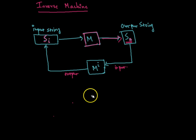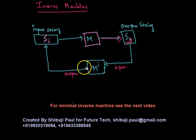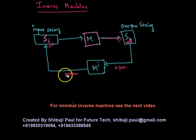In this tutorial I am going to show you how to find the inverse machine of a given machine m. The inverse machine mi of a given machine m is such a machine that the output string of m, if it is supplied as the input string to mi, it produces exactly the input string of m as output. So si is the input string to m producing so as output, and when so is supplied as input to mi, it produces output exactly equal to si.